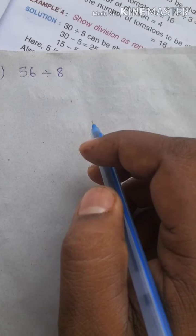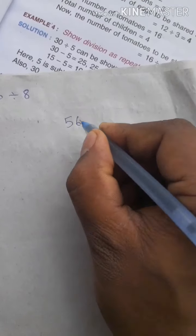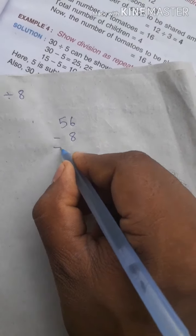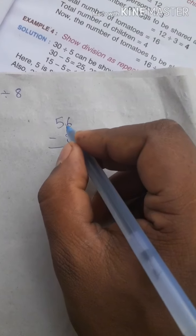Our equation is 56 divided by 8. For doing this question, we have to subtract 8 from 56.